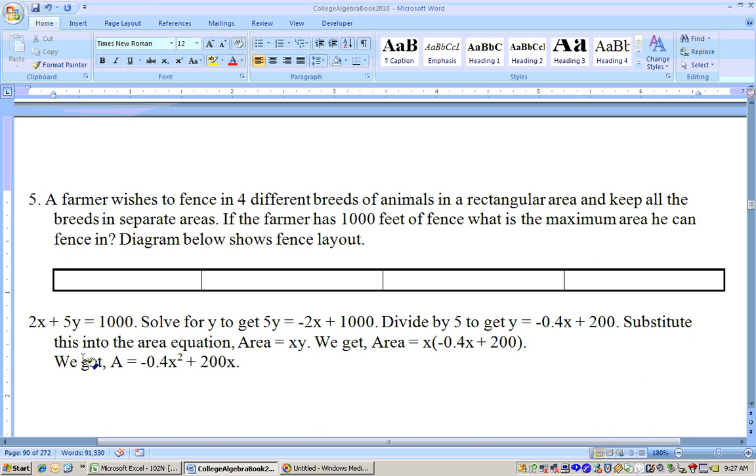Solve this for Y by taking the 2X to the other side, then divide through by 5, and you get Y equals negative 0.4X plus 200. Substitute what Y is right here into the area equation. Area equals X times Y, so area equals X times this stuff. Taking the X through, you get area equals negative 0.4X squared plus 200X.